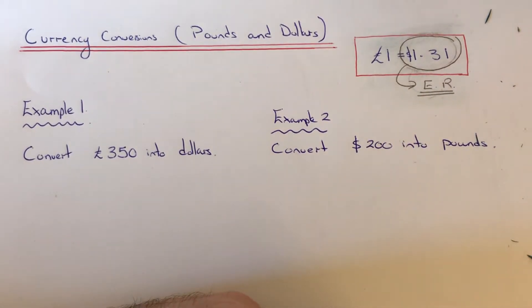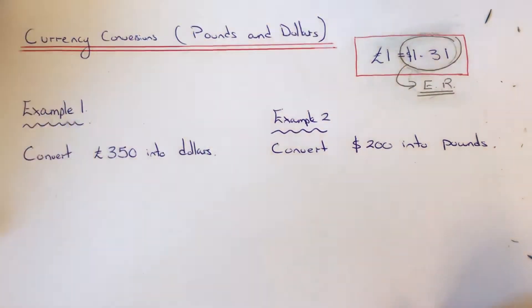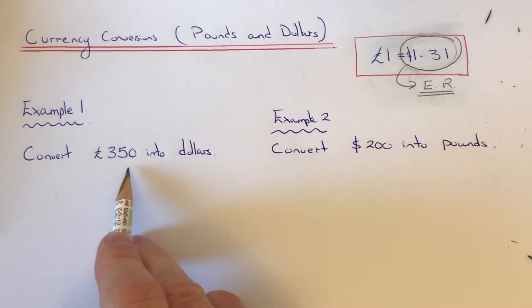So this number is called the exchange rate number, and this is usually stated on your maths exam paper. If it's not, then you can find the exchange rate on Google. So let's have a look at a couple of examples then. Example one: we've got to convert 350 pounds into dollars.